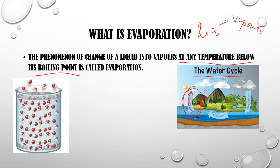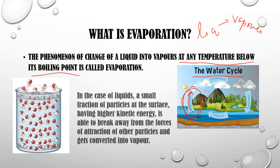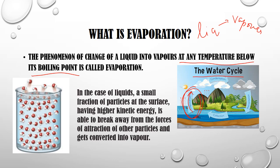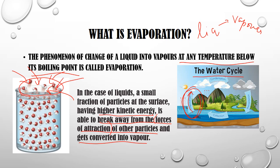The next major difference is that evaporation is a surface phenomenon. The particles on the surface have higher kinetic energy, and they break the attraction between them and get converted into the vapor state. The particles on the surface start absorbing energy from the surroundings, taking up heat energy to break the forces of attraction, and they get converted into gaseous state.